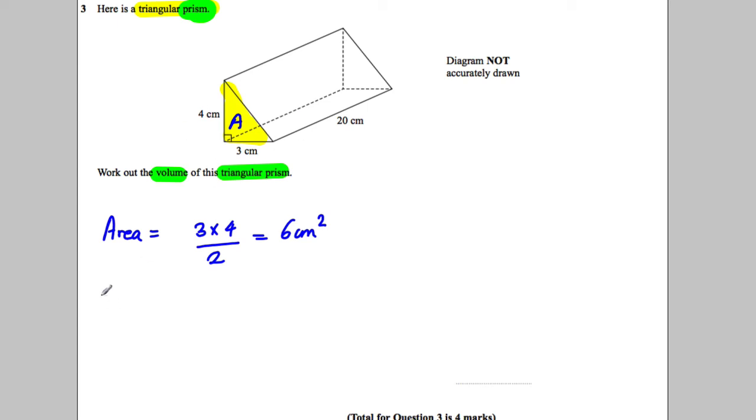Now you want to work out the volume, so the volume is going to be equal to this 6 multiplied by 20, which is going to be equal to 120 centimeters cubed. So 120 centimeters cubed.